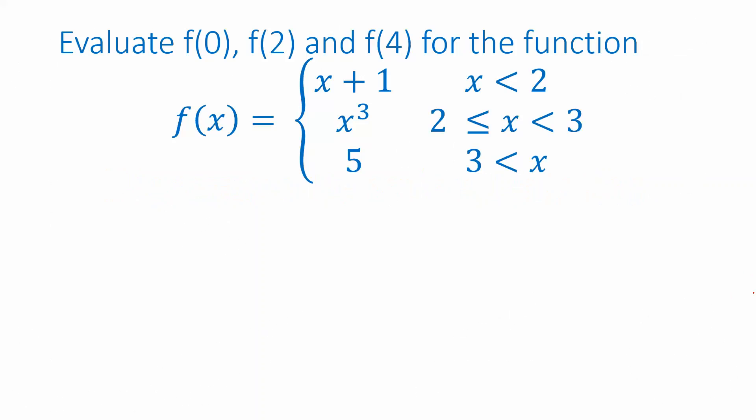This is piecewise notation. This is all one function here. This rule tells us how to evaluate the function depending on what we input for x. This is saying if x is less than 2, we're supposed to use the first line. We're supposed to use the rule from the first line to evaluate f of x. So that means if we're plugging in an x that's less than 2, we'll evaluate the function by plugging that x into the expression x plus 1.